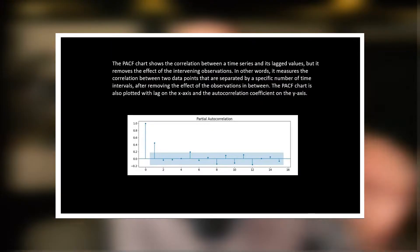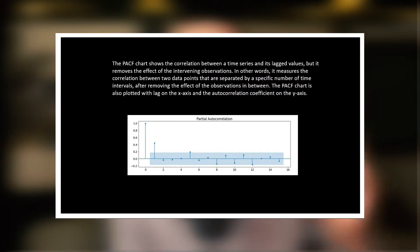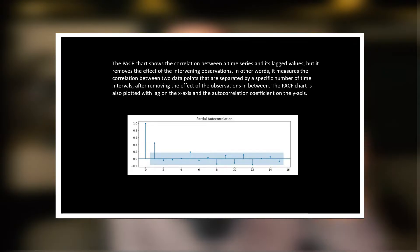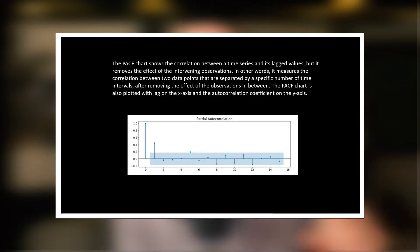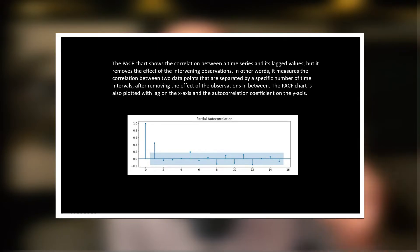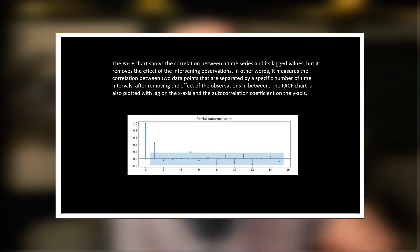The PACF chart also shows correlation between a time series and its lag values, but it removes the effect of intervening observations. In other words, it measures the correlation between two data points separated by a specific number of time intervals after removing the effect of observations in between. The PACF chart is also plotted with lag on the x-axis and the autocorrelation coefficient on the y-axis.